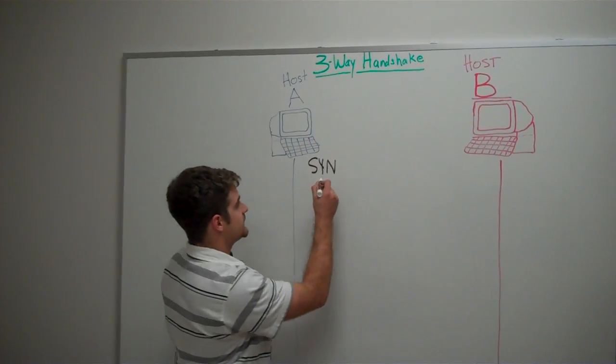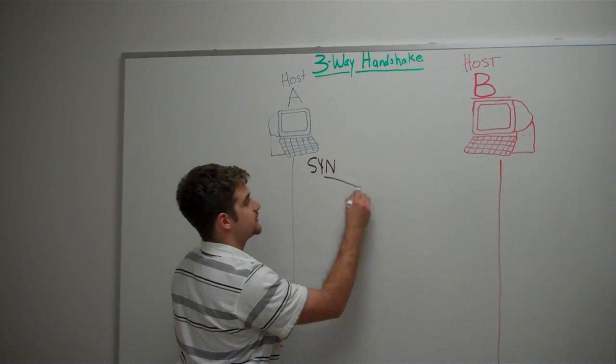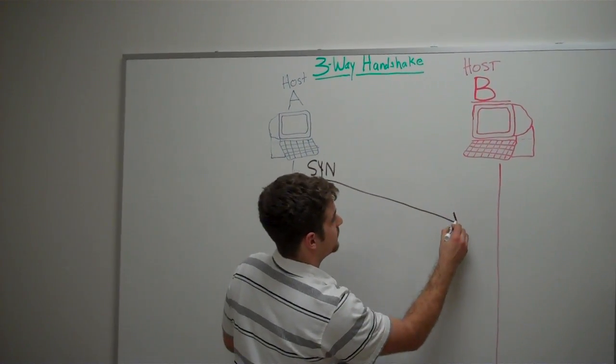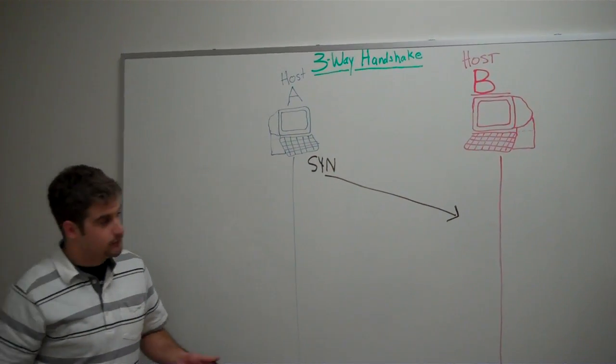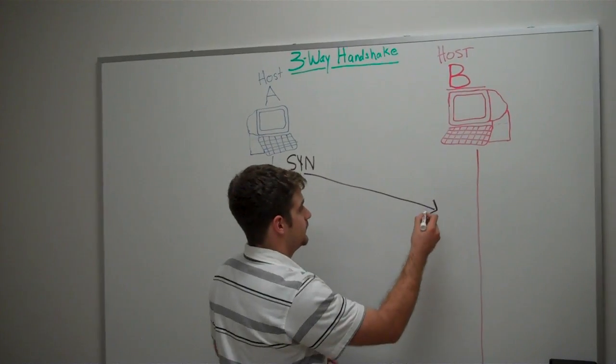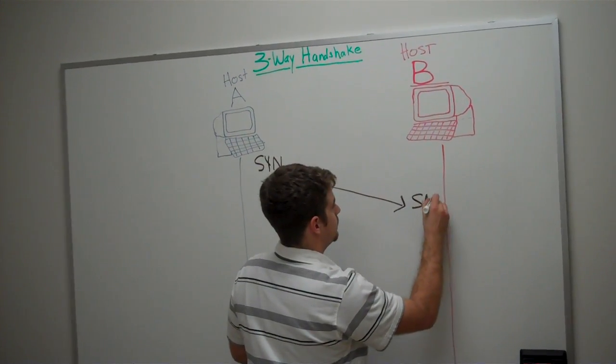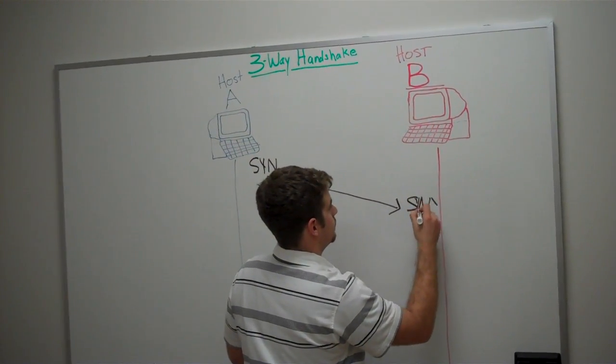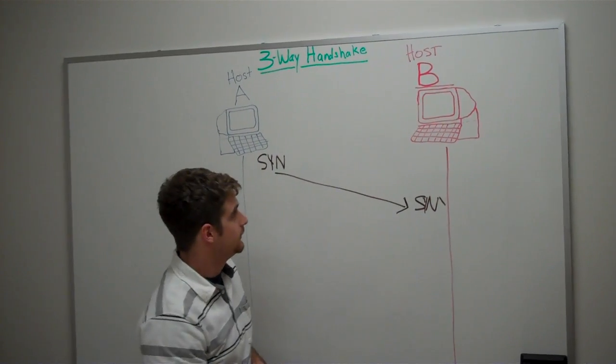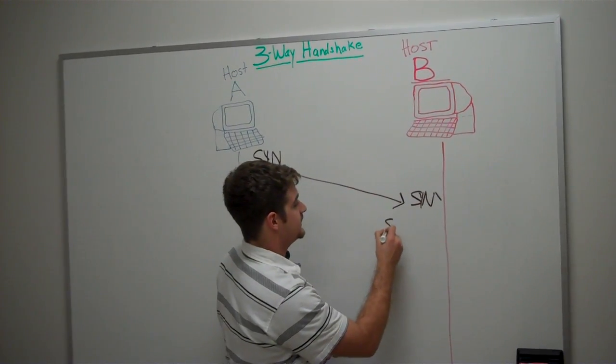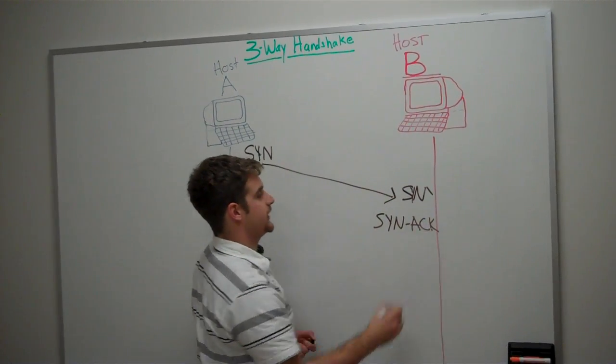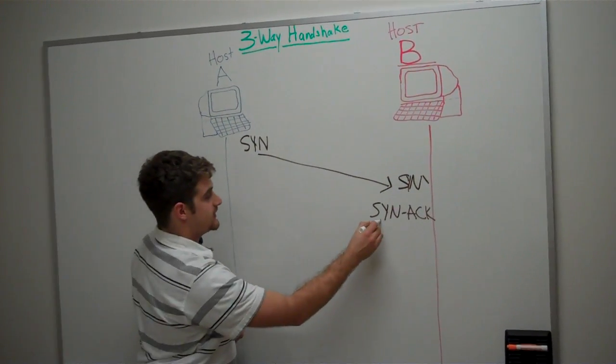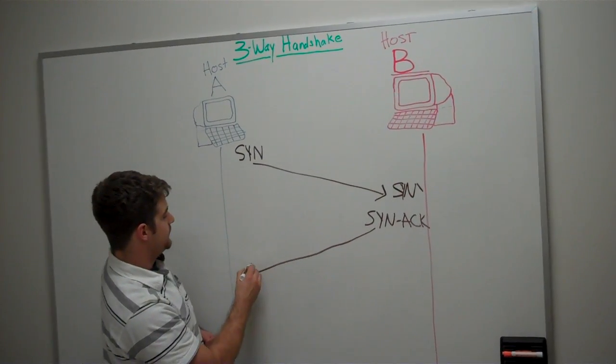Now, it's going to send that over to our host, which would be the web page we're trying to get to. At this point, the host B receives a SYN right here. And host B is going to send a SYN ACK right back over, which is short for acknowledgement. So that's going to be sent right back over with the same kind of information.